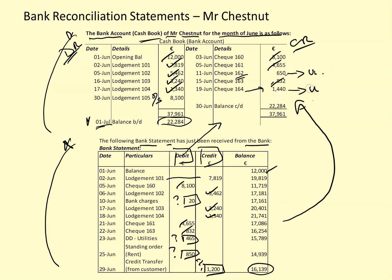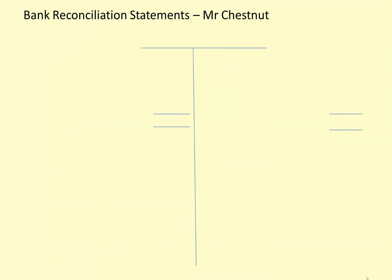So what we have now is four items that are in the bank statement but not in Mr. Chestnut's cash book bank account. We need to update his records with those four items, and then we will do the bank reconciliation statement. So first, we are going to update Mr. Chestnut's bank account cash book.